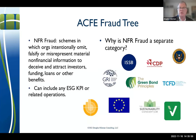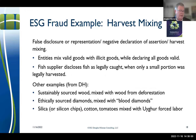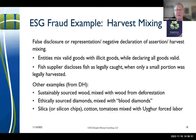One example is harvest mixing — common in agriculture and natural resources — where an entity mixes valid goods with illicit goods. A fish supplier disclosed fish as legally caught when only a small portion was legally harvested. The California Transparency in Supply Chains Act requires traceability and a statement on the company's homepage, and empowers the California Attorney General to bring lawsuits against non-compliant companies.